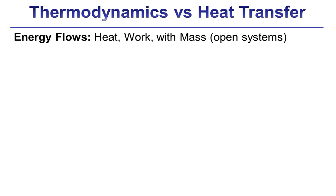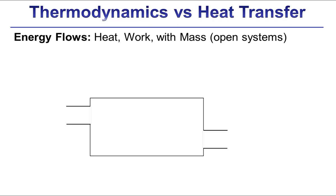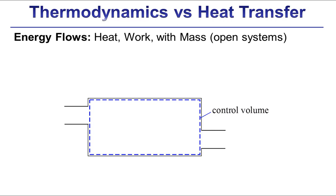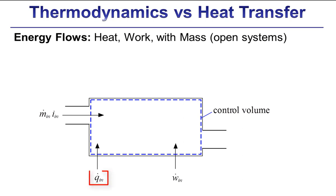Energy can cross a system boundary in the form of heat, work, or — if you have an open system — there's energy associated with the mass that enters or leaves. So let's go through writing an energy balance for an open system. First we define the system boundary, then consider all inflows of energy: a heat transfer rate Q_dot_in, a work transfer rate W_dot_in. These are rates of energy transfer, indicated by the dot, and have units of joules per second, or watts in the SI system.